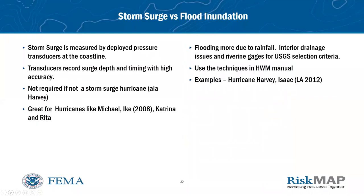Some of the things we try to measure: there's going to be a kind of difference in the flooding. Storm surge is that which is coming in off the ocean or the gulf, and those can differ significantly from riverine flooding.